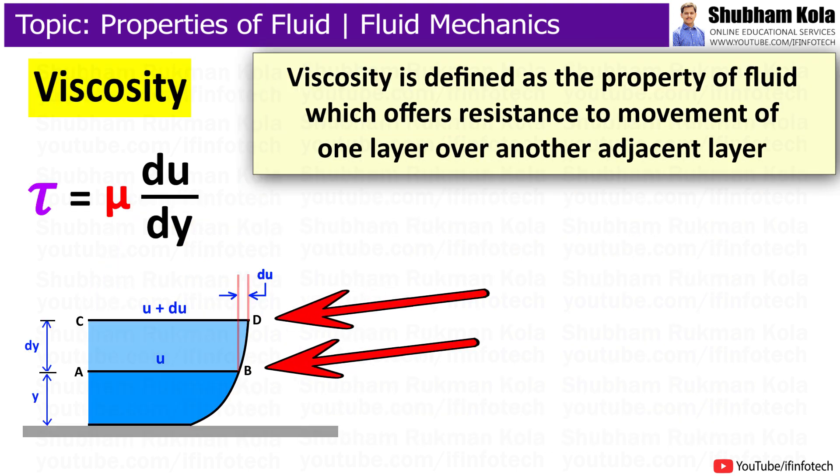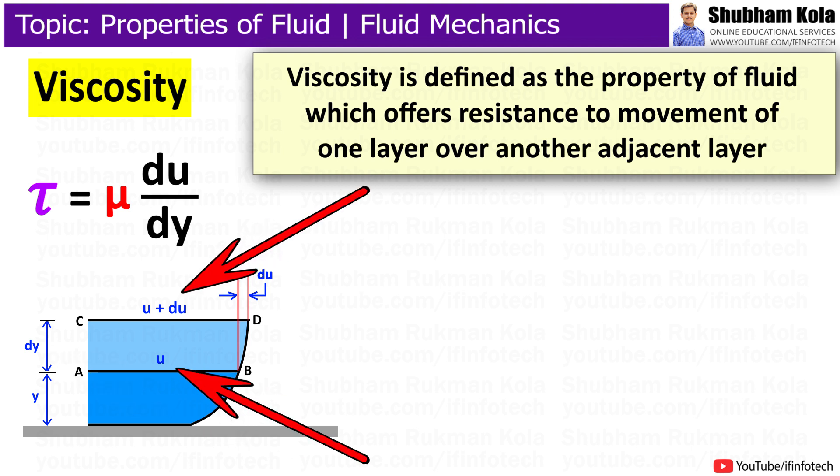To understand viscosity, let's consider two layers of fluid, AB and CD, flowing one over the other at a distance dy, having velocities u and u + du respectively.